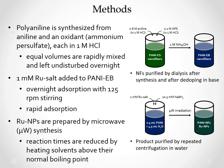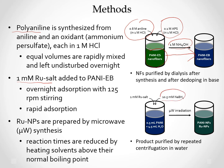Methods: To prepare polyaniline, we take aniline and APS dissolved in HCl and do a rapid mixing, which gives a PANI emeraldine salt form. To change it to PANI emeraldine base, we treat it with a base. Then we add ruthenium salt and do the reduction by sodium borohydride in the microwave. Finally, we purify the samples by centrifuging in water.